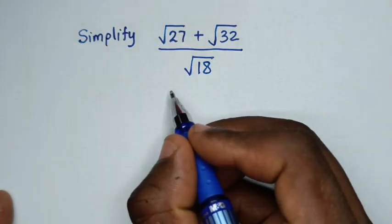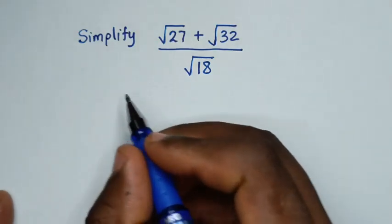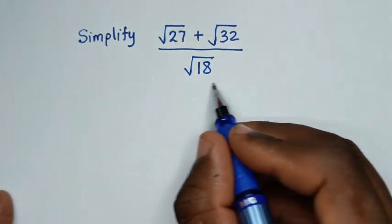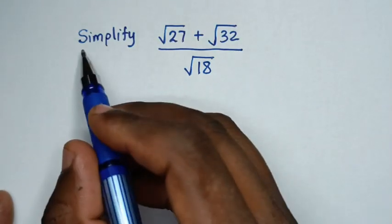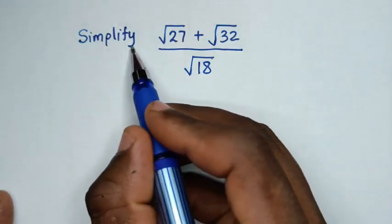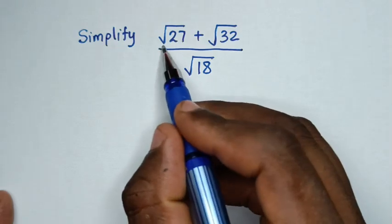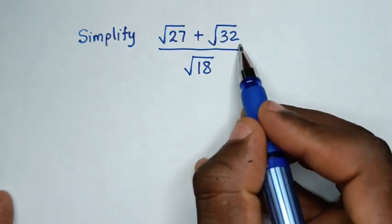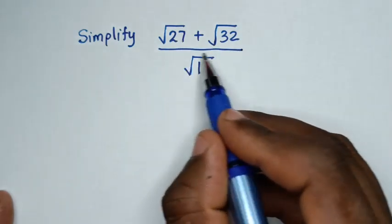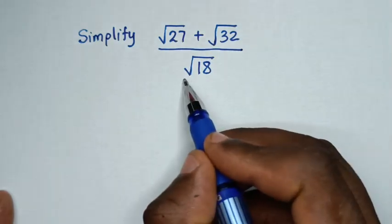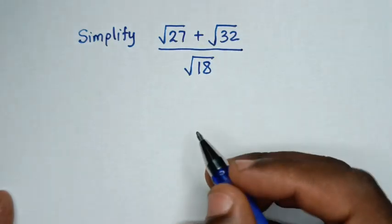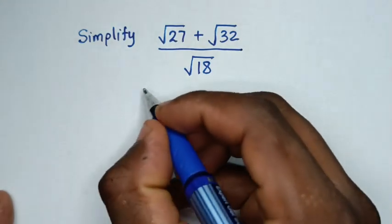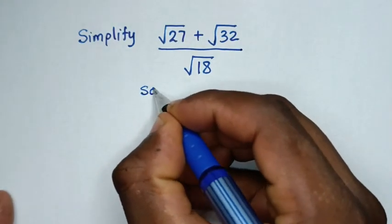Hello, you are welcome to solve this math problem: simplify square root of 27 plus square root of 32 over square root of 18. Now, solution.